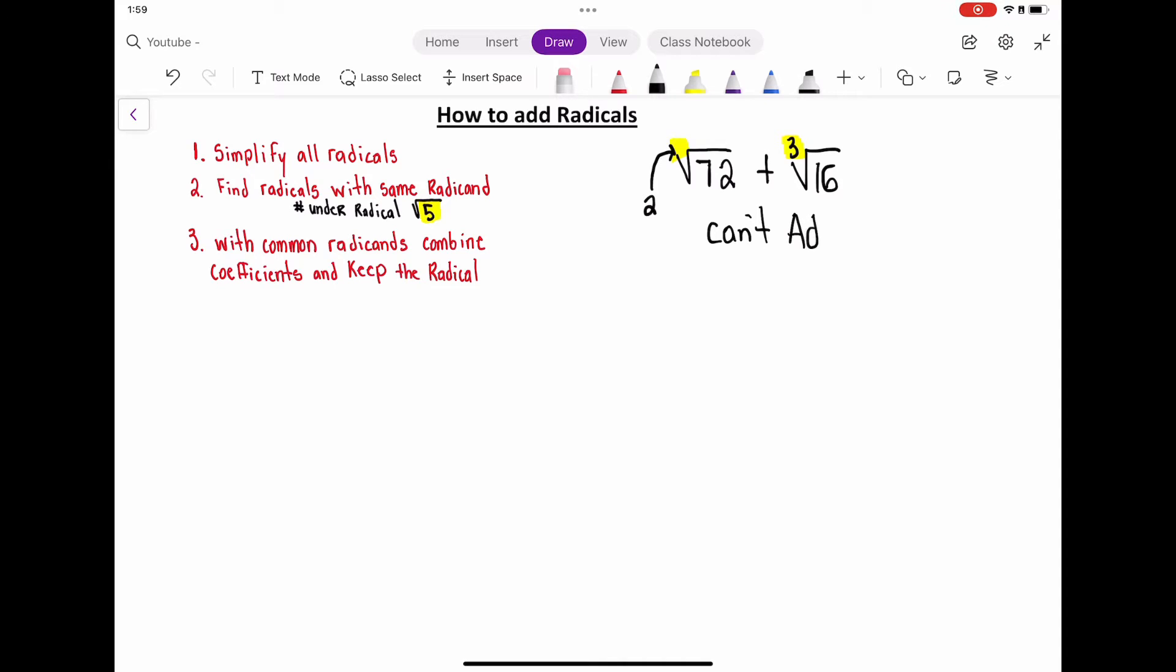But let's say we do have radicals with the same root. So let's say we had something like this: radical 50 plus radical 18 plus radical 10. And in our previous video of how to simplify radicals, remember, we're going to try to break all these radicals down using the largest perfect square.